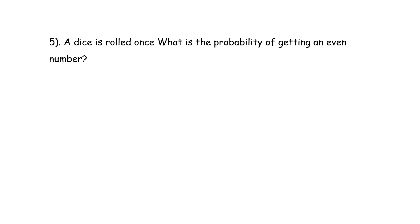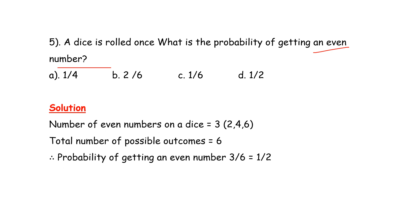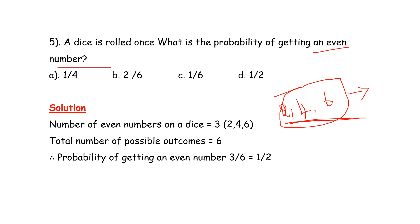A die is rolled once. What is the probability of getting an even number? The even numbers on a dice are 2, 4, and 6 — so 3 favorable outcomes out of 6. The probability is 3 divided by 6, which simplifies to 1 divided by 2. Option D is the correct answer.